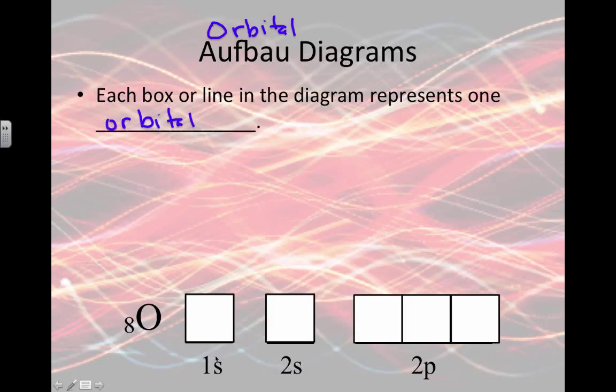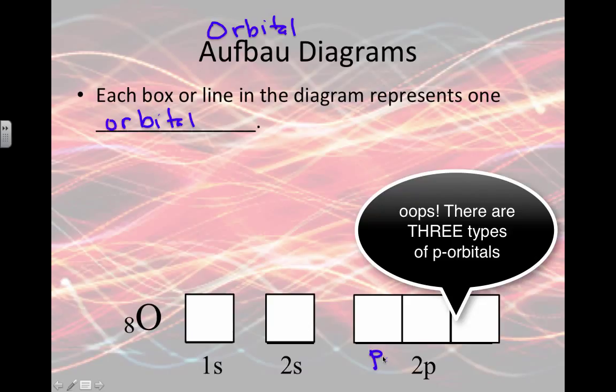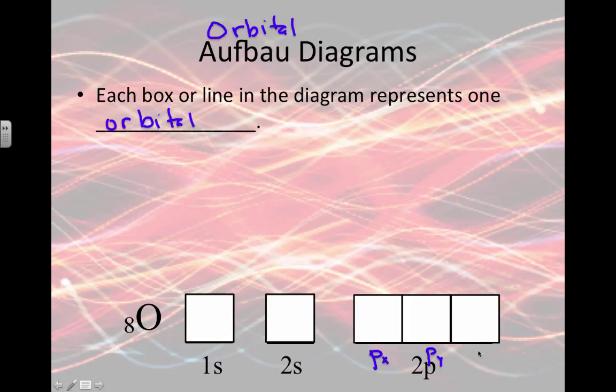We have only one type of s in energy level 1, one type of s in energy level 2, but in energy level 2 we could have two types of p: the p that's along the x-axis, the p that's along the y-axis, or the p that's along the z-axis. Those are the three different orientations the p orbital could have.